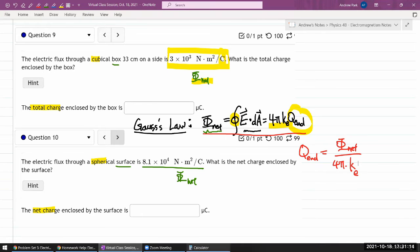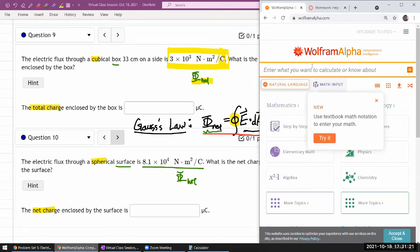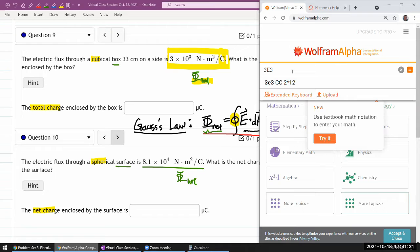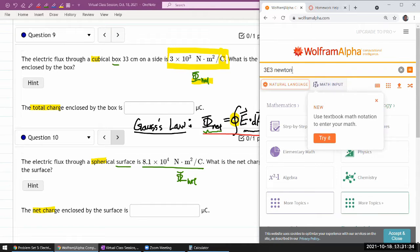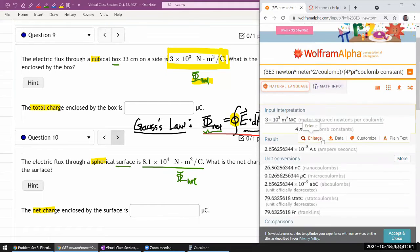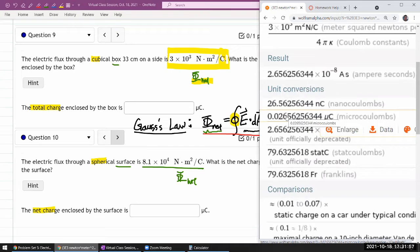Let me do this calculation in Wolfram alpha, so that I don't have to look up Coulomb constant. Just because I'm lazy. So it's going to be flux for question 9, 3E3. Let me type in the units, so that Wolfram alpha will work out the units for us. Newton times meter squared per Coulomb, that's the flux, divided by 4 pi Coulomb constant. Then you get an answer in microcoulomb, that's exactly what I'm looking for. I don't even have to do part of the conversion. So 0.0266 microcoulomb.